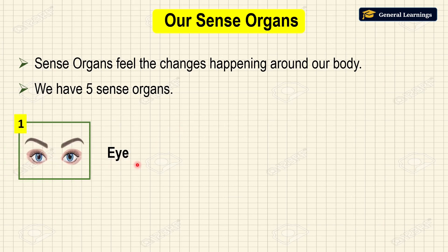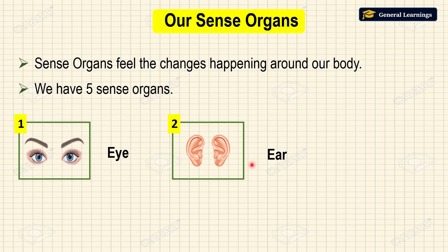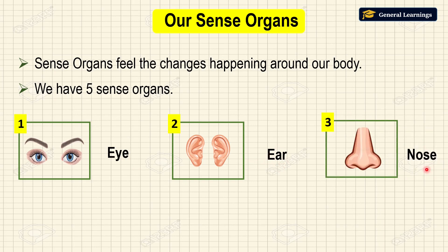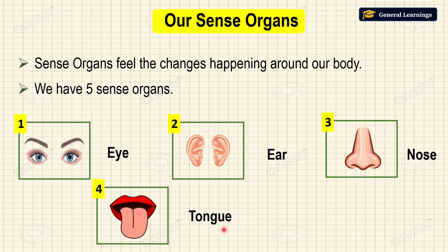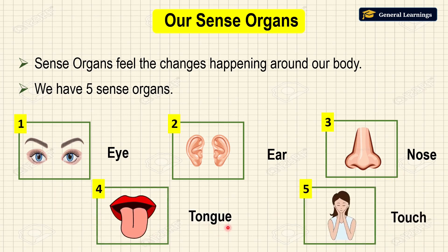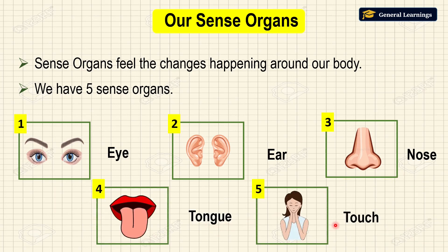The five sense organs are: eye, ear, nose, tongue, and touch. So these are called the five sense organs.